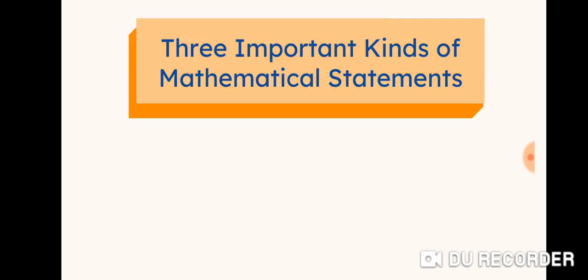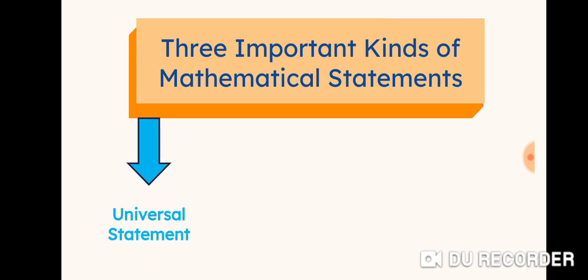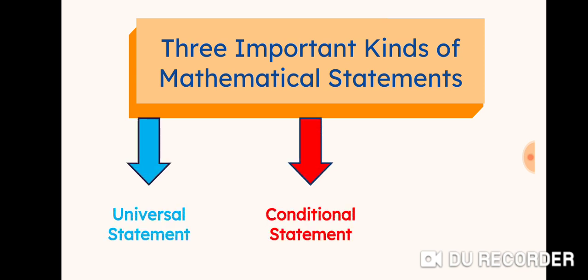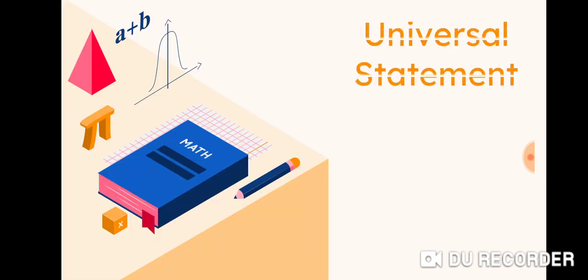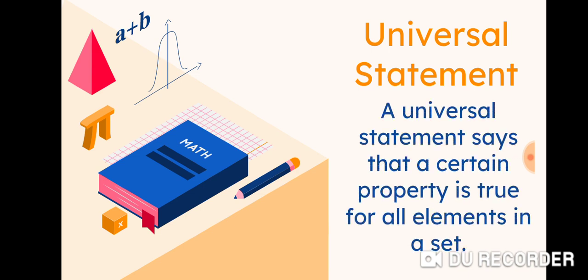There are three important kinds of mathematical statements. First is the universal statement, second is the conditional statement, and third is the existential statement. So let us first deal with the universal statement. A universal statement says that a certain property is true for all elements in a set.